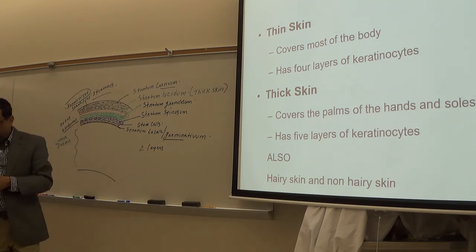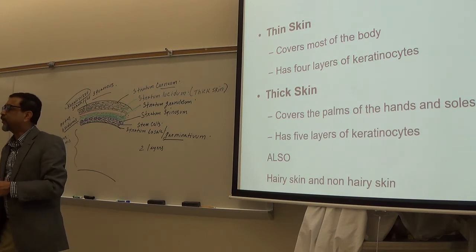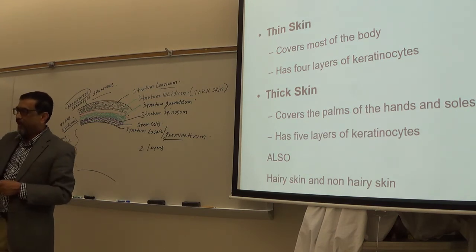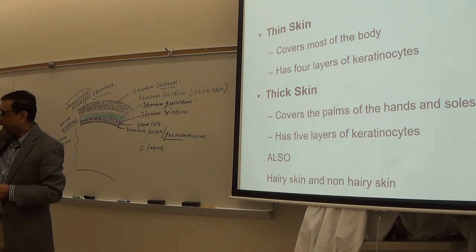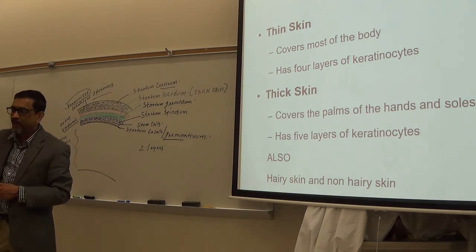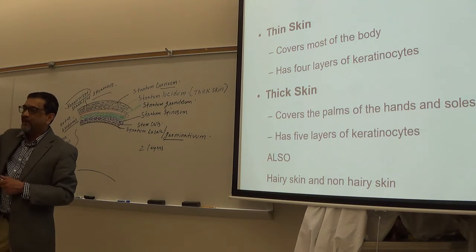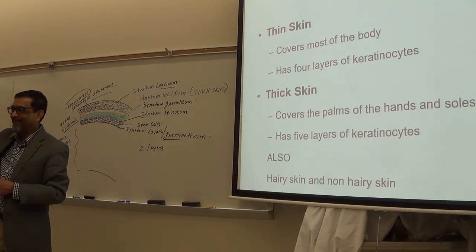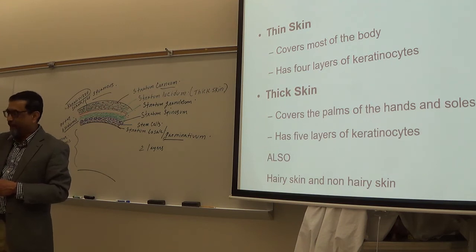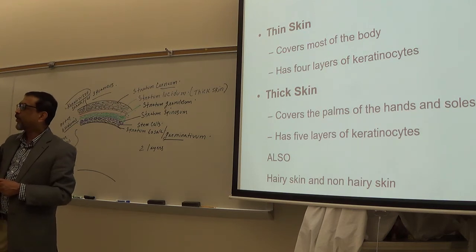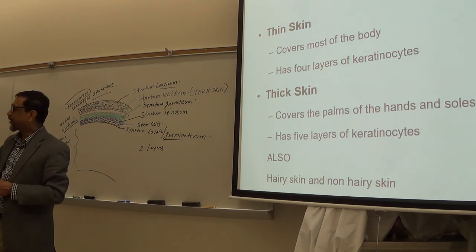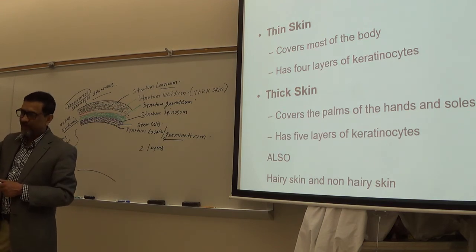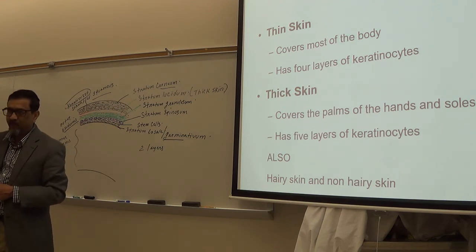So to summarize: skin has two layers — outer epidermis and inner dermis. Epidermis is thin. In thick skin the epidermis has five layers; in thin skin it has four. Dermis is thicker and has only two layers.